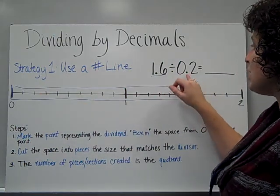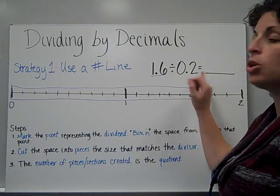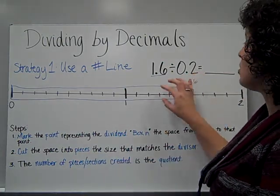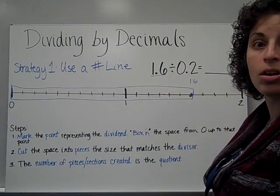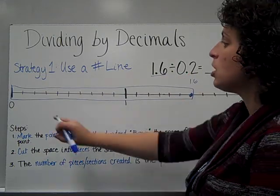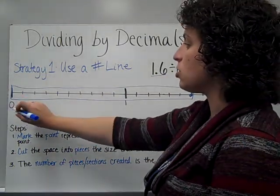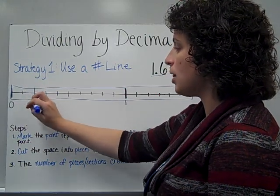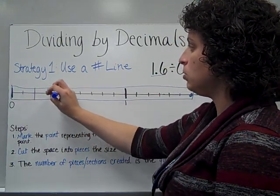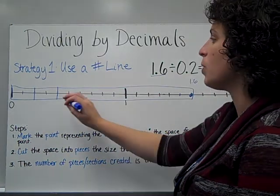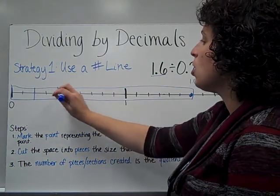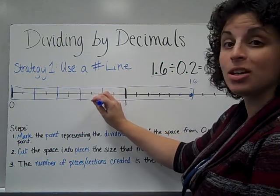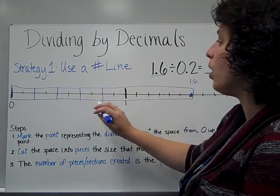Now I need to divide it into 2 tenths. I'm going to cut this space into pieces that are 2 tenths each. Starting at 0, I'm going to count over 2 tenths: 1, 2, and I'm going to draw a line. Each of those was a tenth, that's why I'm counting: 1, 2, 1, 2. And I continue to do this until I can't make any more.